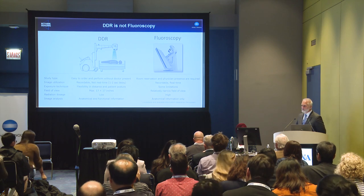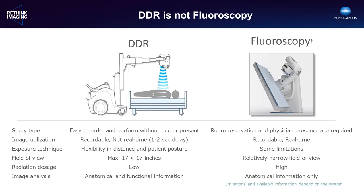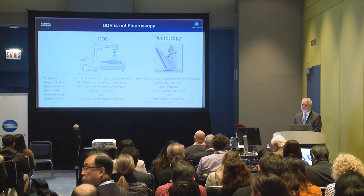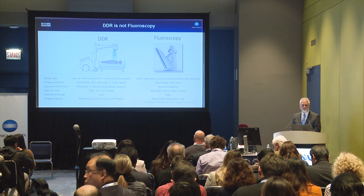It's important to note that DDR is not fluoroscopy. There are a few key differences. First, there is a 1 to 2 second delay between the start of the exposure and the time the first fully processed image is visible on the operator's console. DDR is limited to a maximum 20-second exposure, though the exposure terminates any time the technologist releases the hand switch. Unlike fluoro, DDR has a large field of view and usually delivers a lower dose than comparable fluoroscopy exams. Also, unlike fluoroscopy, the physician does not have to be in the room, enabling scheduling just as you would any conventional x-ray.